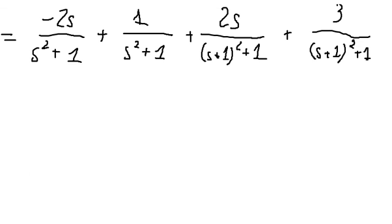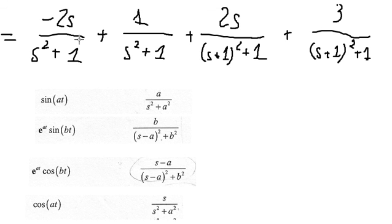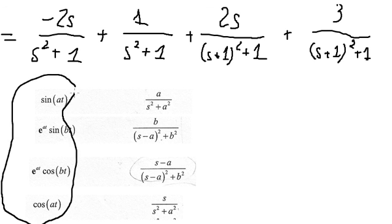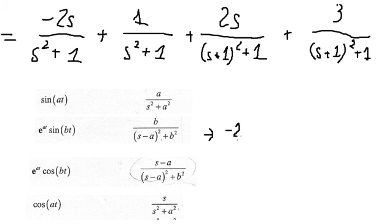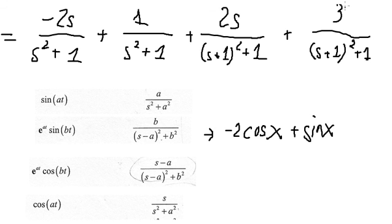Now we have the inverse Laplace formulas here. We need to convert back. For negative two s over s-squared plus one, we apply the cosine formula — here a equals one, so we get negative two cosine(t). For one over s-squared plus one, a equals one, so we get sine(t). For the next term, we borrow the value of three, leaving positive two, then we subtract two, giving one — this allows factorization.